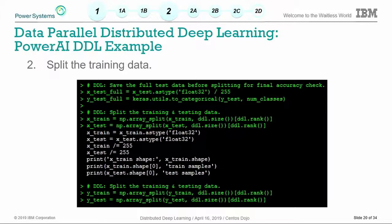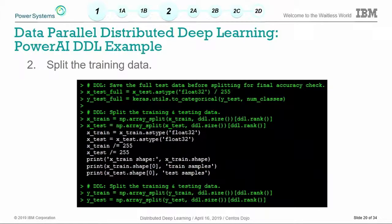Here we're splitting the data. At the top we set aside the full test data so we can do a full validation run at the end. For X_train and X_test we're using NumPy to split those arrays, using two functions: ddl.size, which gives you the number of GPUs in your training job, and ddl.rank, which gives you the ID of the current GPU. If you're running on two Summit nodes — 12 GPUs — your size would be 12 and your rank would range from 0 to 11. You can also use those functions to control things like printing only on rank zero.